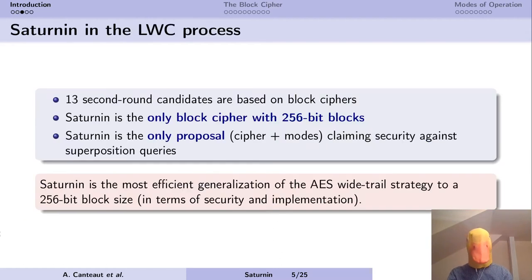Currently in the lightweight crypto process, there are 13 second-round candidates that are based on block ciphers. Saturn is the only one that uses 256-bit blocks. It's also the only proposal, including the cipher and the modes of operation, that claims security against quantum adversaries and superposition queries, where the adversary can basically encrypt the quantum state. We think Saturn is also the most efficient internalization of the AES design strategy to a bigger block size of 256-bits, whether in terms of security or in terms of implementation.